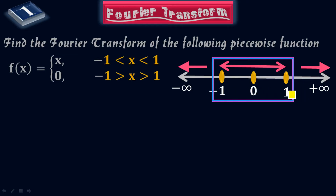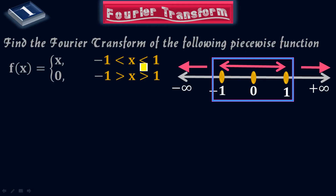Remember, negative one and positive one are not included because there is no equality bar — x must be strictly greater than negative one and strictly less than one. Since there is only an inequality bar, negative one and positive one are excluded from the domain. If you don't remember what domain and range of a function are, you can check my calculus one course where there is a complete section on that topic.